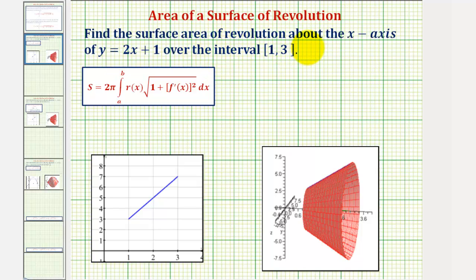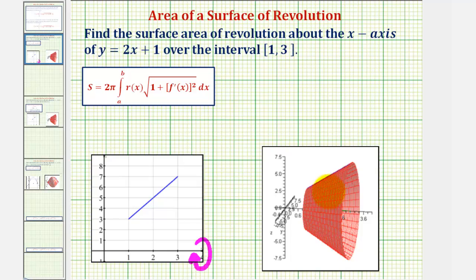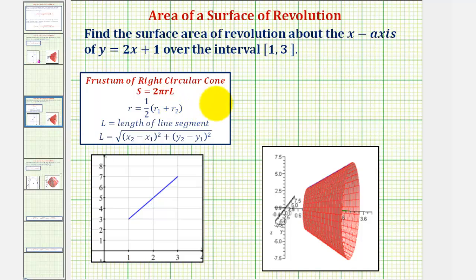We want to find the surface area of revolution about the x-axis of the linear function y equals two x plus one over the closed interval from one to three. Looking at the graph on the bottom left, here's our linear function on the closed interval from one to three. To rotate this about the x-axis would give us this surface. Our goal is to find the surface area of this surface. Because this surface is a frustum of a right circular cone, we could find the surface area using this geometric formula here, but let's first find the surface area using integration, and then we'll verify it using this formula.